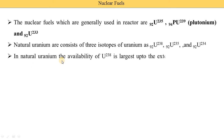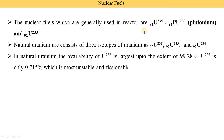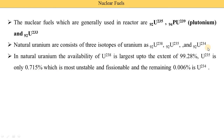In natural uranium, the availability of Uranium-238 is the largest, up to 99.28%. Suppose we find one ton of uranium — out of that one ton, 99.28% is Uranium-238, 0.715% is Uranium-235, and 0.006% is Uranium-234. So the majority of naturally available uranium is Uranium-238.